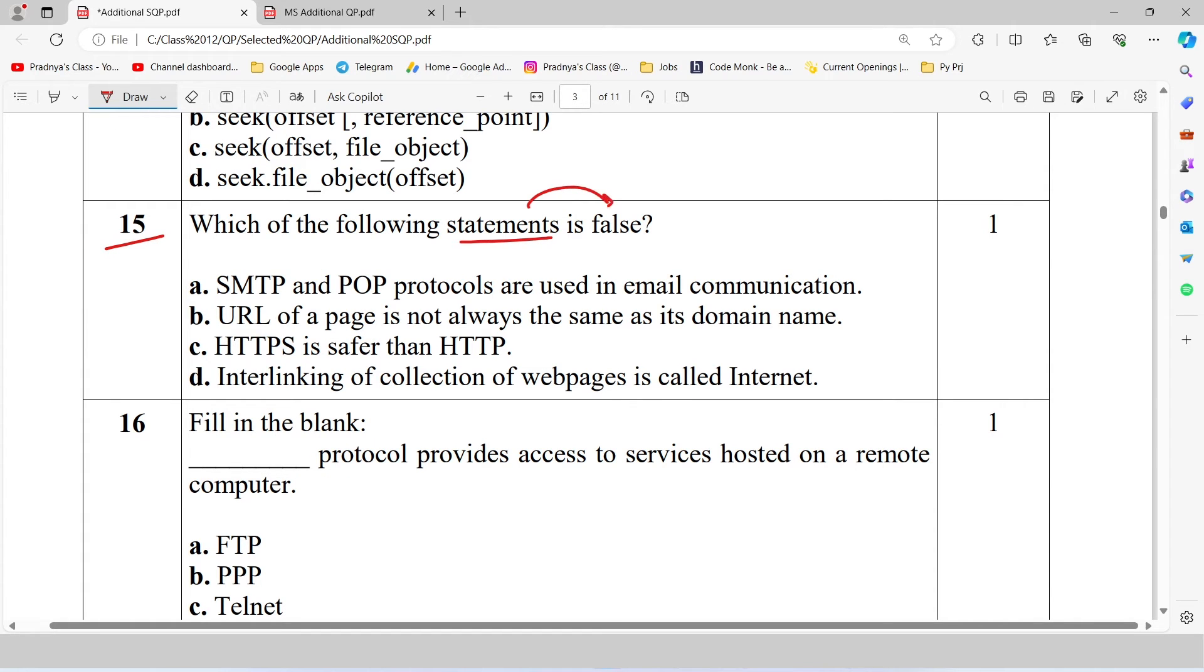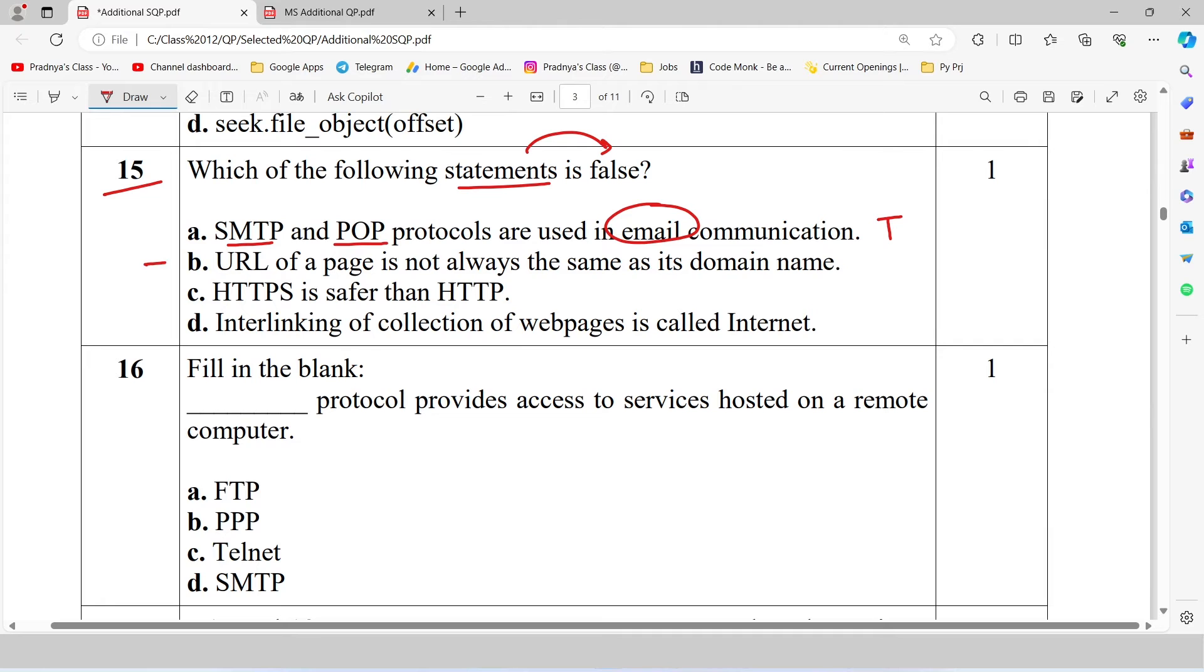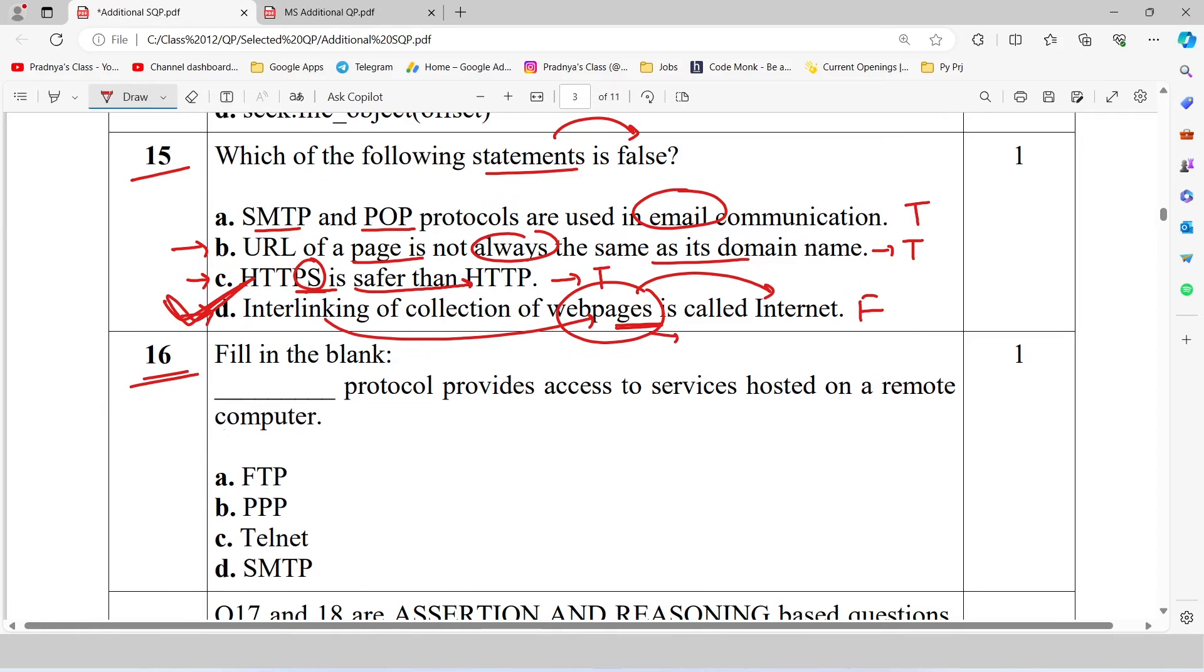Look at the next question. Which of the following statements is false? SMTP and POP protocols are used in email communication. This statement is true. Let's check the next statement. URL of a page is not always same as its domain. Yes, this is also true. URL and domain name is different. Look at the third statement. HTTPS is safer than HTTP. Yes, this is true. HTTPS is the secured version of HTTP. Let's read the last one. Interlinking of collection of web pages is called internet. This is false because collection of web pages is website. So the correct choice is D.